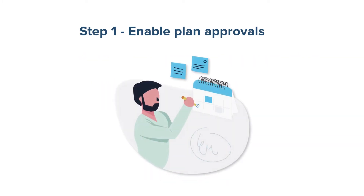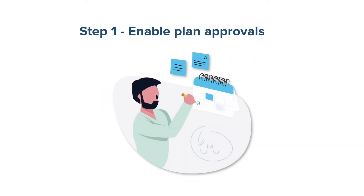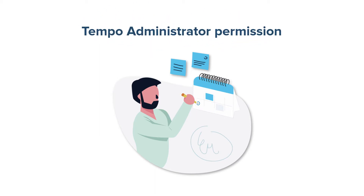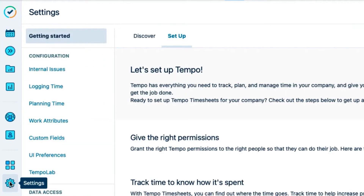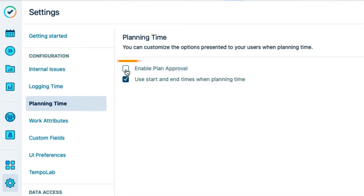First off, Tempo Planner itself needs to be enabled for plan approvals. This needs to be done by someone with Tempo Administrator permissions, which I happen to have. I'll go to the Tempo Settings, and select Planning Time, and then check Enable Plan Approval. And that's it.